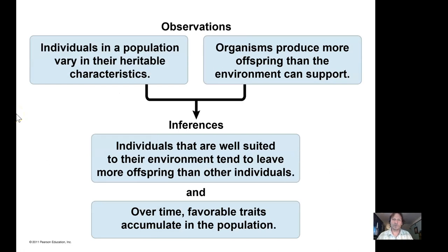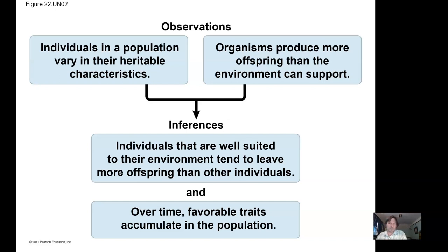Let's relate this to evolution. The key biological observations are: first, individuals in a population vary in their heritable — meaning genetic — characteristics; and second, organisms produce more offspring than the environment can support. Not all offspring survive, so individuals better suited to the environment tend to have more offspring survive. Over time, this selection pressure accumulates changes in gene frequencies in the population.